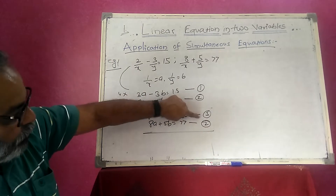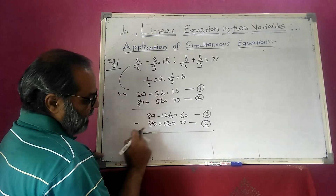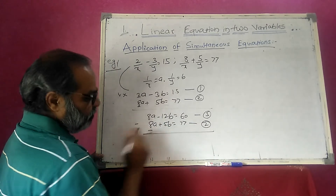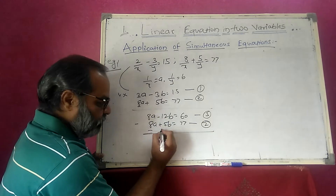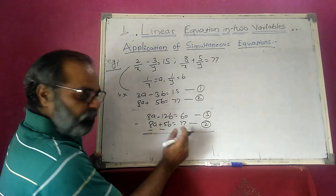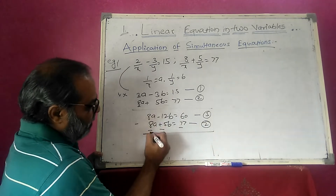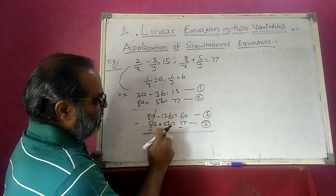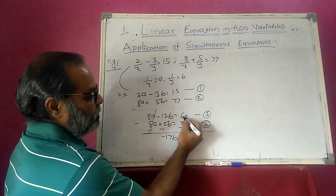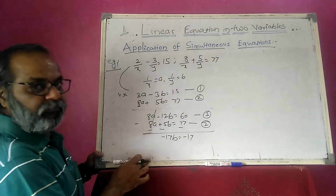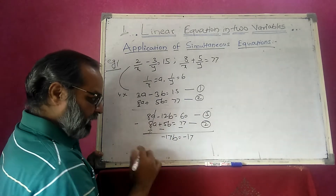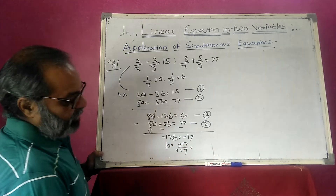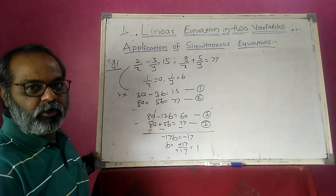I subtract equation 2 from equation 3, changing all signs of equation 2: 8a becomes minus, 5b becomes minus, 77 becomes minus. So 8a minus 8a cancels. Then minus 12b minus 5b gives minus 17b, and 60 minus 77 gives minus 17. So minus 17b equals minus 17, therefore b equals minus 17 over minus 17, which is 1.